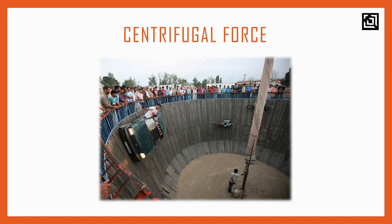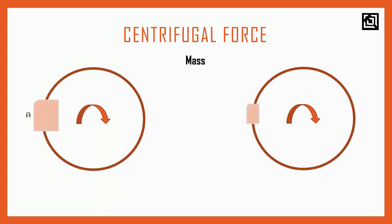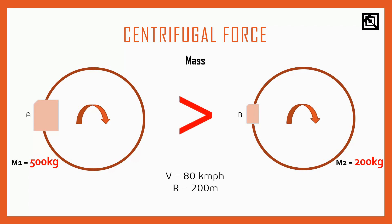We will look at mass, velocity, and radius variation. Let's take a look at two bodies: body A and body B. We have to vary the mass while keeping the velocity and radius the same. The mass of body A is 500 kg and the mass of body B is 200 kg. Now we apply these values to calculate the centrifugal force for each body.